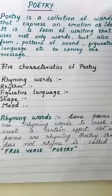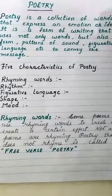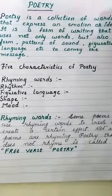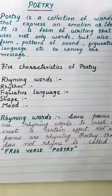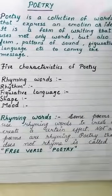So here are five characteristics of poetry. First is rhyming words, second is rhythm, third is figurative language, fourth is shape, and fifth is mood. Now I am going to explain all these points in detail.